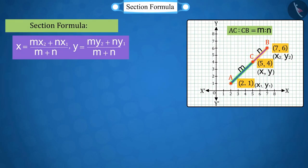In the section formula's point x, by placing all the values, the values of m:n can be determined, where x=5, x₁=2, and x₂=7.